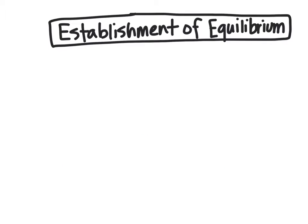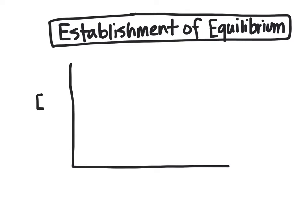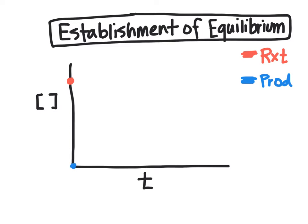We're going to look at the establishment of equilibrium using a graph. On our y-axis will be the molar concentration, represented by square brackets, and on our x-axis will be time. In this graph, red is going to be the reactant concentration and blue is going to be our products.